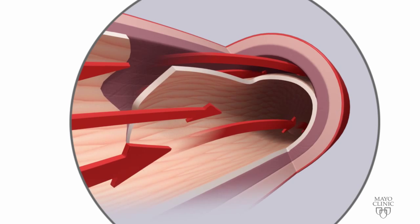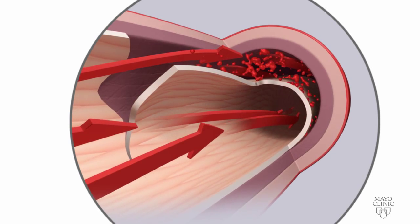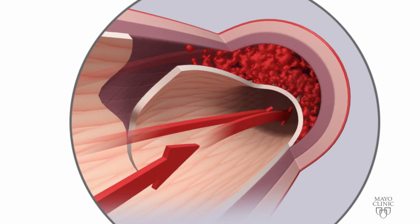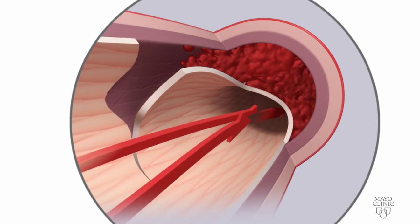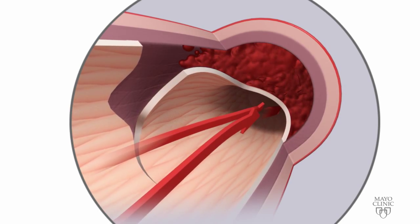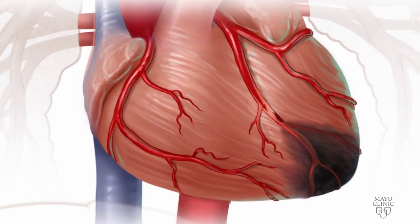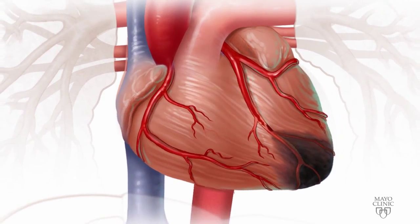Sometimes the split remains small, but the blood in between the layers can clot. This clot, called an intramural hematoma, may cause the normal artery channel to become narrow, blocking blood flow to the heart.